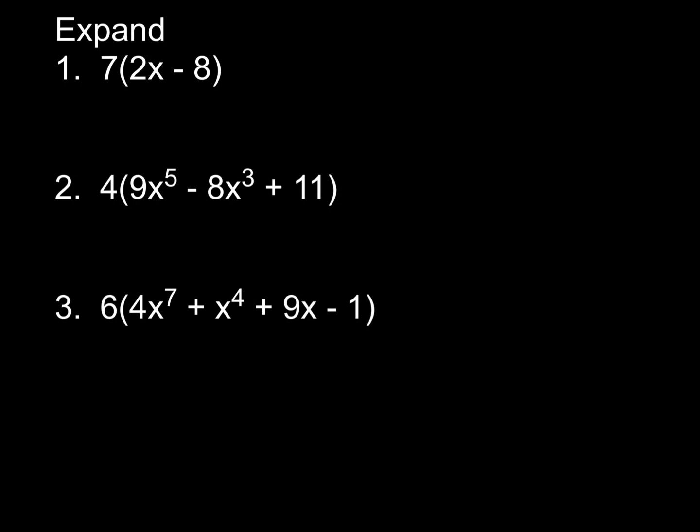The first thing you're doing in expanding these is basically the distributive property. For number one, you're going to multiply that 7 into both of those terms. 7 times 2x gives us 14x, then multiply 7 times 8, which stays minus, so it's minus 56. That's it. That is expanding, because expanding means to multiply it out.